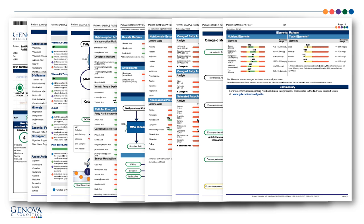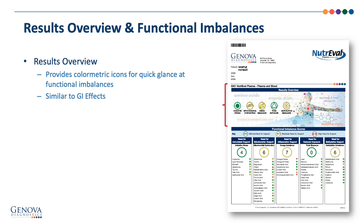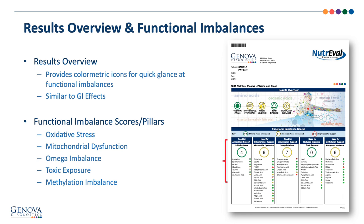The front page of the report is a synthesis of information based on the test results. The top section is the results overview graphic with color metric icons for each functional imbalance assessed. Underneath are the five functional imbalance pillars, which contain an overall score and all individual biomarkers contributing to that score. These sections include oxidative stress, mitochondrial dysfunction, omega imbalance, toxic exposure, and methylation imbalance.